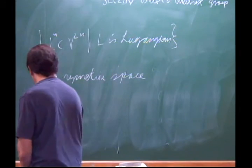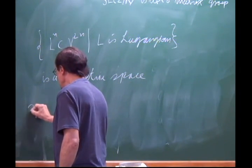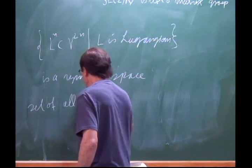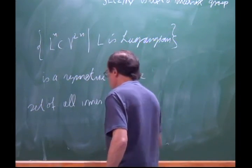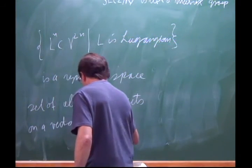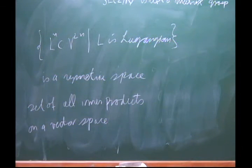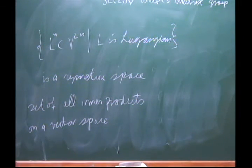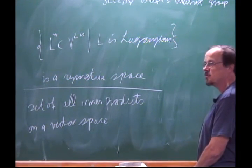Another example: take a vector space V and look at all inner products on V. The set of all possible inner products is a manifold, and that's a typical example of a symmetric space. There are many others, often with very geometric descriptions, and especially the non-compact versions are very important in number theory and many other areas of mathematics.